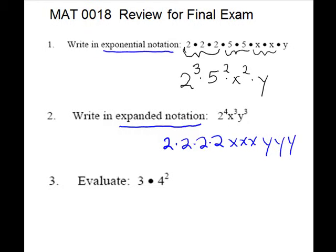Problem 3. Evaluate 3 times 4 squared. This is an order of operations question. Exponents will come before multiplication, so you need to work out the 4 squared. You can do it on the side somewhere. It means 4 times 4, which is 16. You still have the 3. And now do 3 times 16, gives you 48.